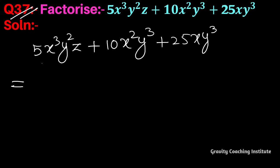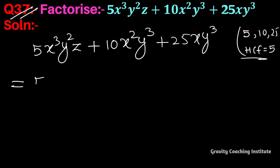इन तीनों ही टर्म में जो numerical coefficient है वह है 5, 10 और 25 तो इनका HCF जो होगा वह 5 होगा। तो एक तो 5 common है और फिर x तीनों ही टर्म में है तो x के least power common लेना है।